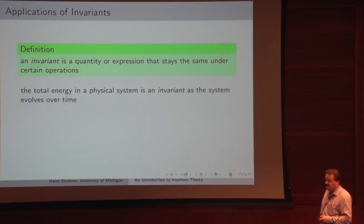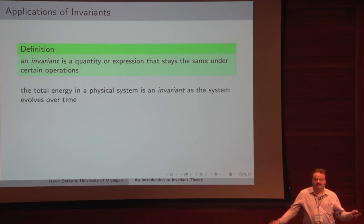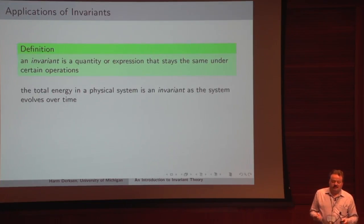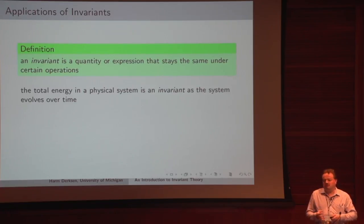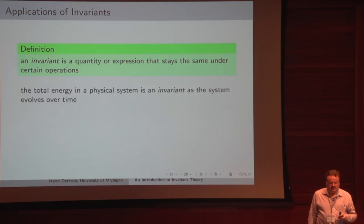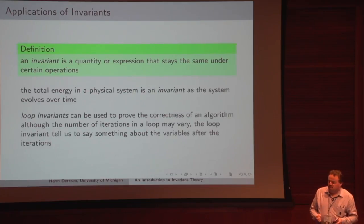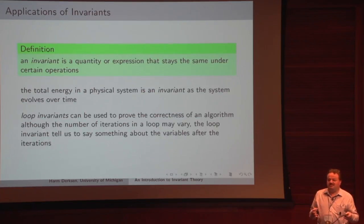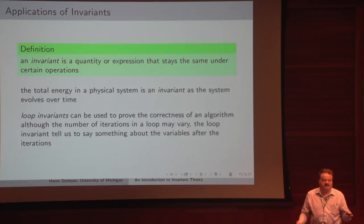An invariant, in the most general way, is something — some quantity or expression — that stays the same under some kind of transformations or operations. For example, in physics, if you take the total energy of some system that stays the same over time, you could say that's an invariant.